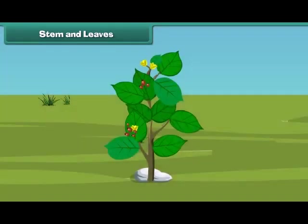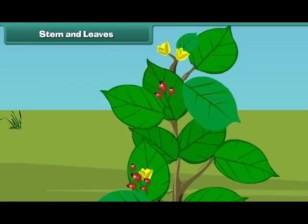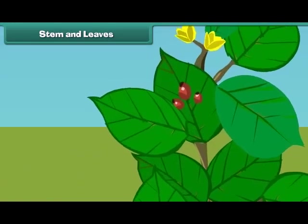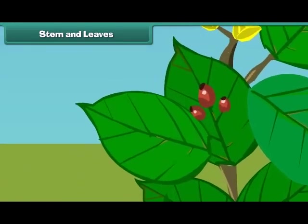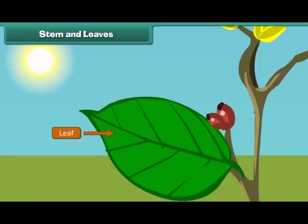Friends, do you know which part of the plant helps it to prepare food? That's right — it is the leaves. Leaves are green in color and are born out of the stem.